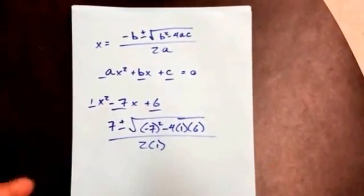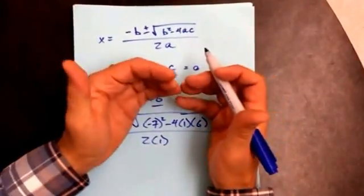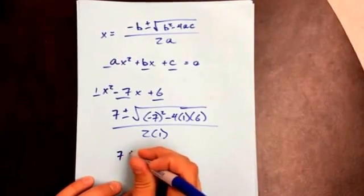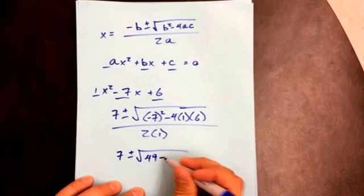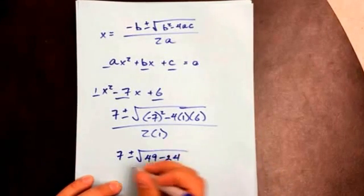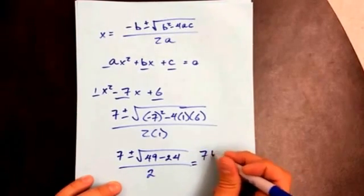Now you have to do, the order of operations says you have to do what's underneath the radical first. It counts as parentheses, and we talked about that before, the implied parentheses. So I'm going to simplify what's under there right now. Negative 7 squared is 49. 4 times 6 is 24. 2 times 1 is 2. I'm going to continue to simplify underneath the radical.